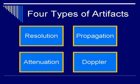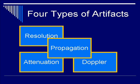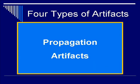Now let's move on to talk about propagation artifacts. This group of artifacts, covered under the propagation name tag, forms the largest group of artifacts within the four types we're going to discuss in this lecture. It includes phenomena such as mirror image, reverberation, multipath phenomenon, speed propagation error, as well as other artifacts that we'll discuss in detail later on.